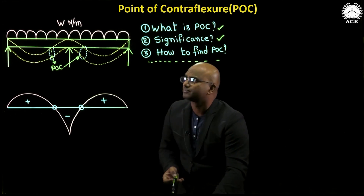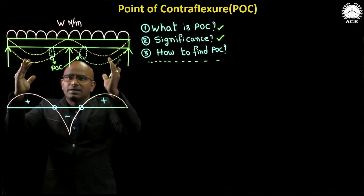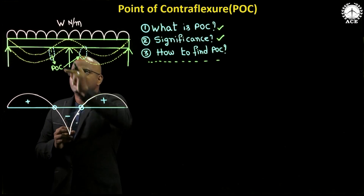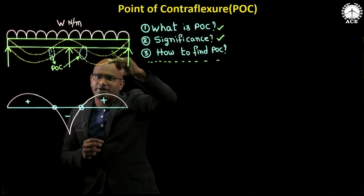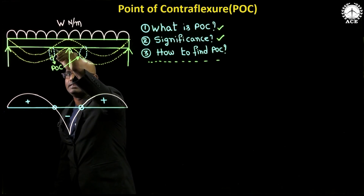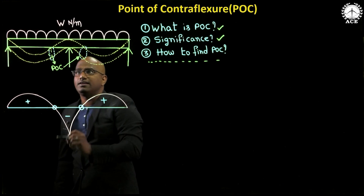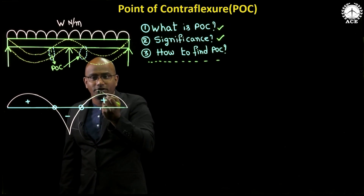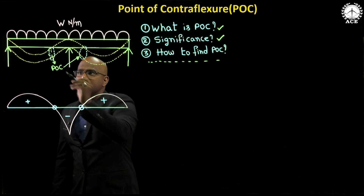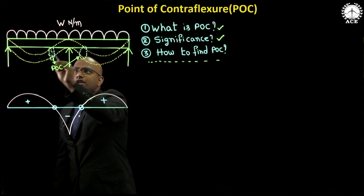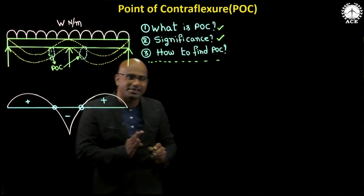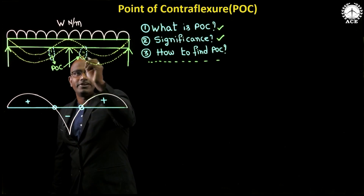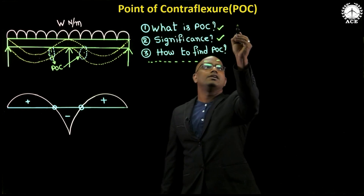Assume I have a beam subjected to a continuous load — completely UDL. Because of the load, the beam deflects such that one part is under sagging, then hogging, then sagging again. The point of contraflexure is where the curvature changes from sagging to hogging or hogging to sagging. In this beam, there are two POCs — one here and one here.